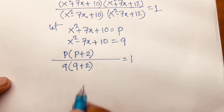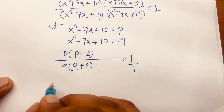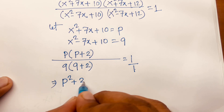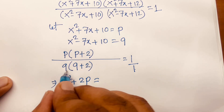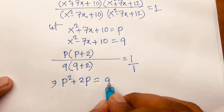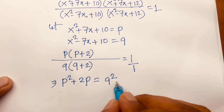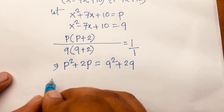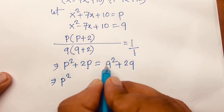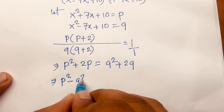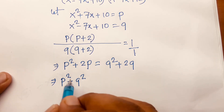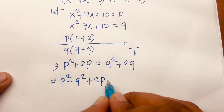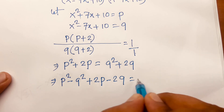Then, cross-multiplying: 1 times p squared plus 2p equals q squared plus 2q. Rearranging, this equation becomes p squared minus q squared plus 2p minus 2q equals 0.